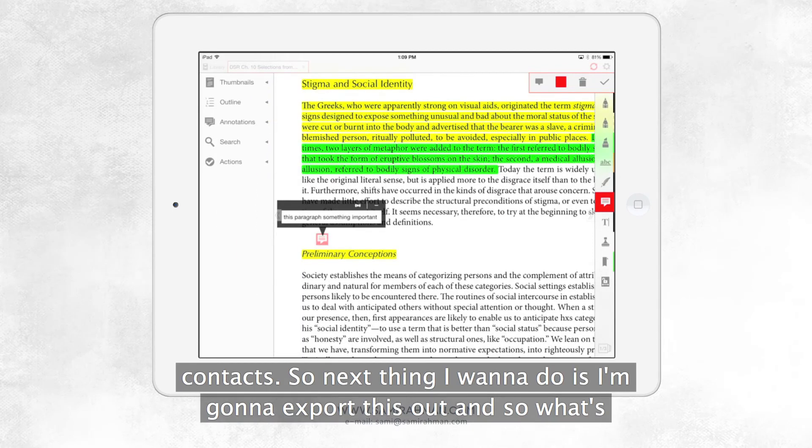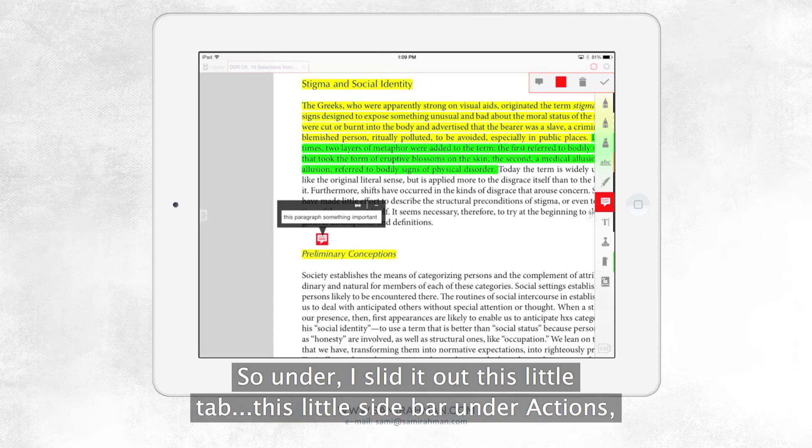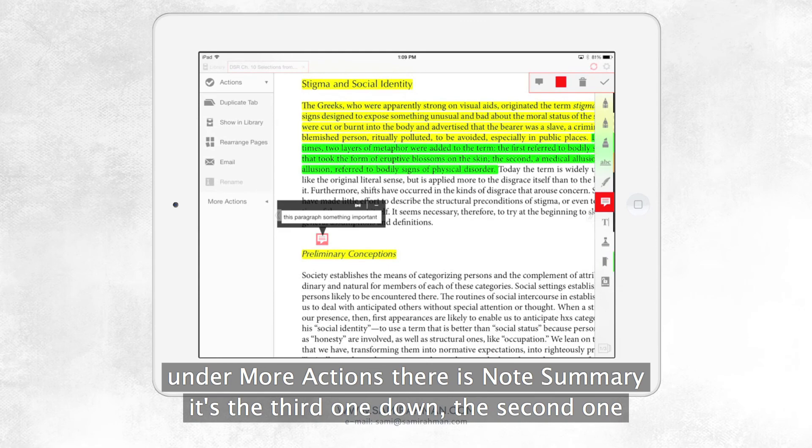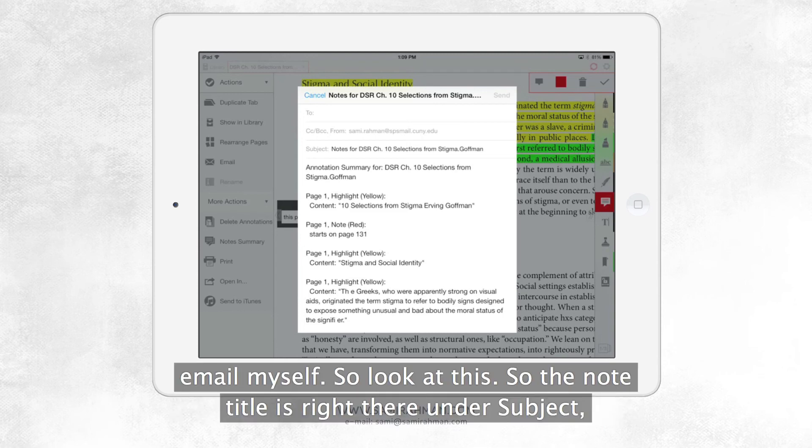So the next thing I'm going to do is I'm going to export this out. So what's beautiful and what absolutely makes this app worth it is this feature. So under, I slid out this little tab, this little sidebar. Under actions, under more actions, there is note summary. It's the third one down, the second one down under more actions. And this now creates a summary of the notes that I can email myself.